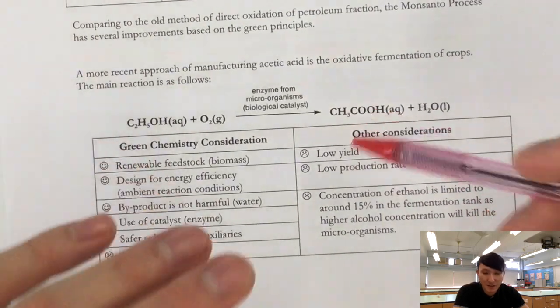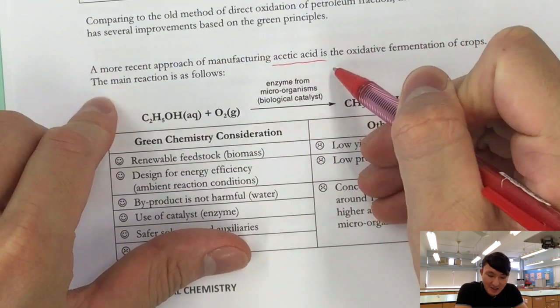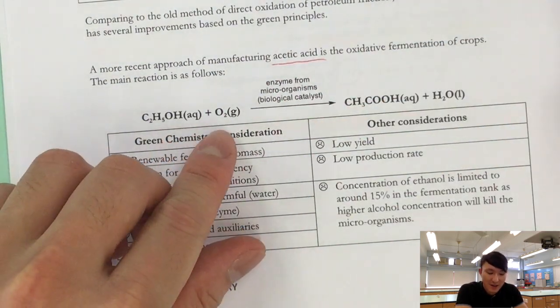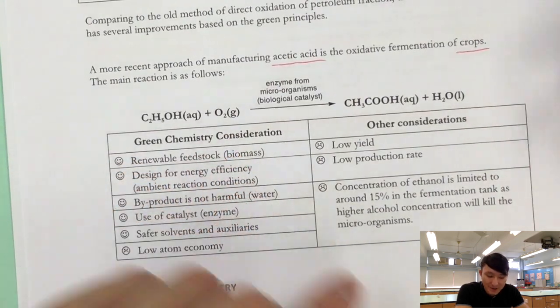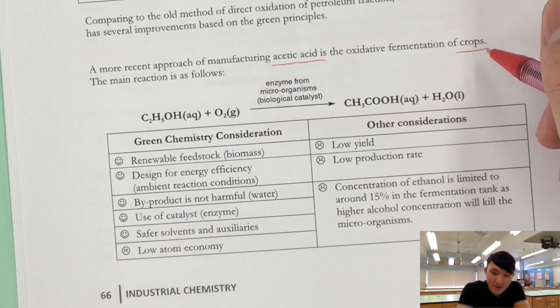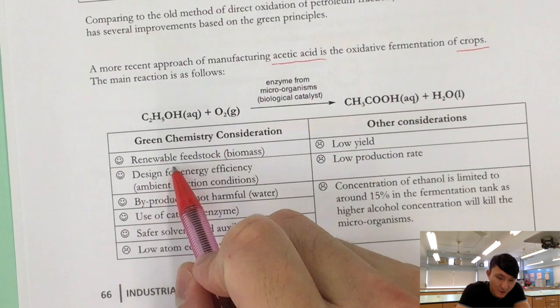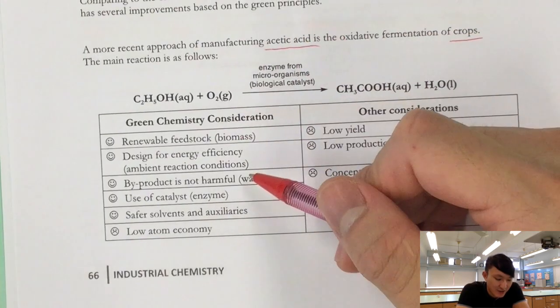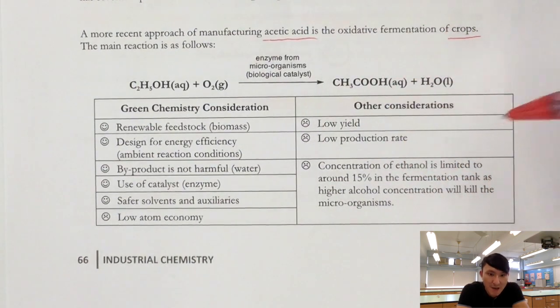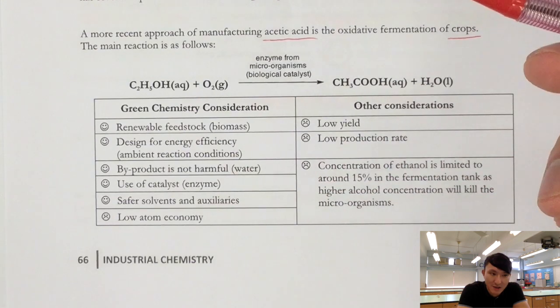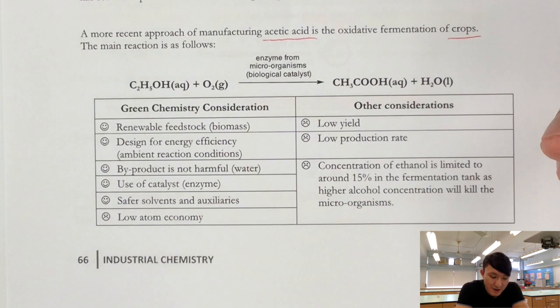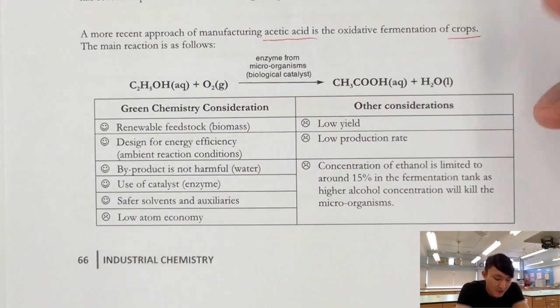However, this one is even greener than Monsanto process. So here, we are making acetic acid from ethanol using an oxidative fermentation of crops. Now you notice the raw material is crops, which is renewable. So of course, this one is very green because it uses renewable feedstock. This is already the first advantage. Secondly, it has a good energy efficiency because the reaction takes place at ambient condition. So it's maybe 35 degrees Celsius, one atmosphere. At such a temperature, heat does not lose very readily.